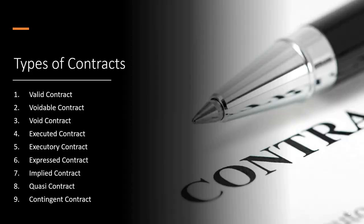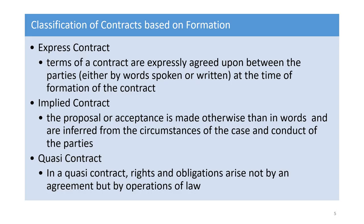Now let's get into the details of the different types of contracts. In general, there is something called a void contract, a voidable contract, a valid contract, executed, executory, express, implied, quasi, and contingent. These types can be classified based on their categories. On the basis of formation — how they have been created — there are three categories: express, implied, and quasi.